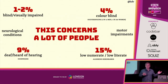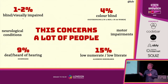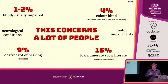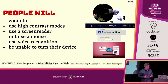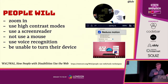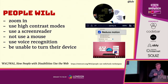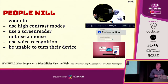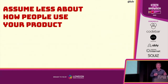There are a lot of different disabilities — some people are deaf or blind or hard of hearing, are low-numerate, have motor impairments, or neurological conditions. There are a lot of reasons why people use the web in a different way than you might expect. People will come to your website and do things they need to do to use it: they might zoom in, use high contrast modes, use a screen reader, not use a mouse, access everything through voice recognition, or can't turn their device because it's attached to their wheelchair.